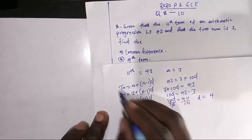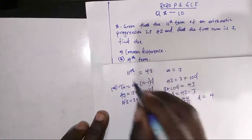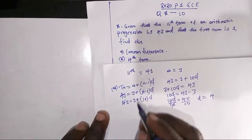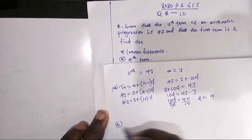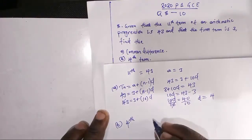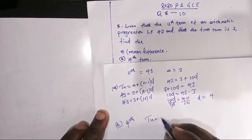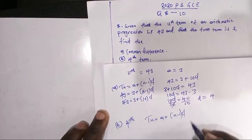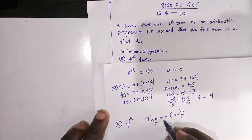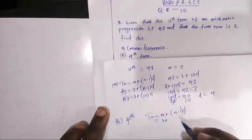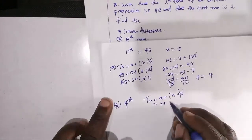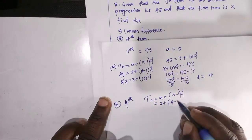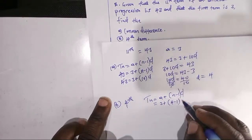Now for part B, we are told to find the 4th term. The formula is T_N equals A plus open bracket N minus 1 close bracket times D. The first term A is 3, so we have T_4 equals 3 plus open bracket 4 minus 1 close bracket, and the difference is 4.